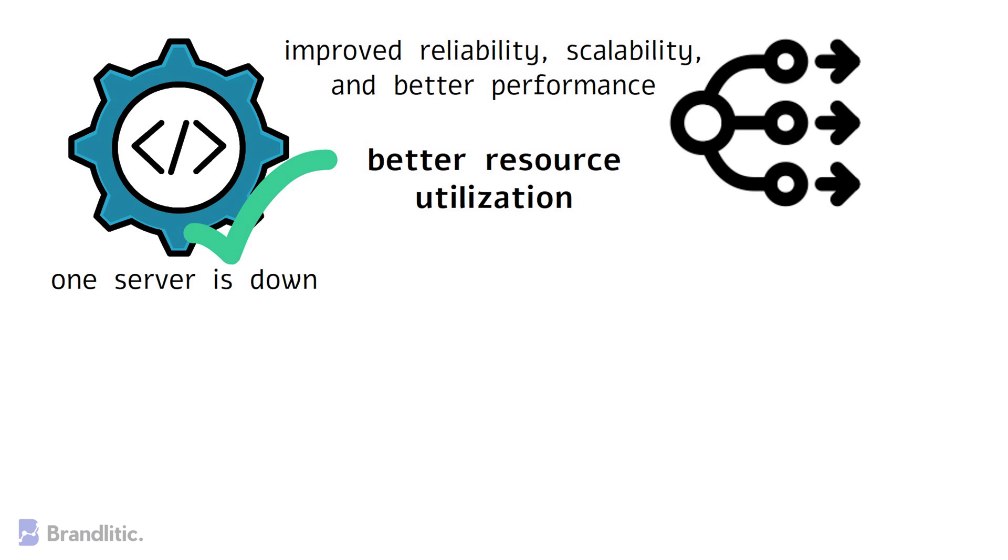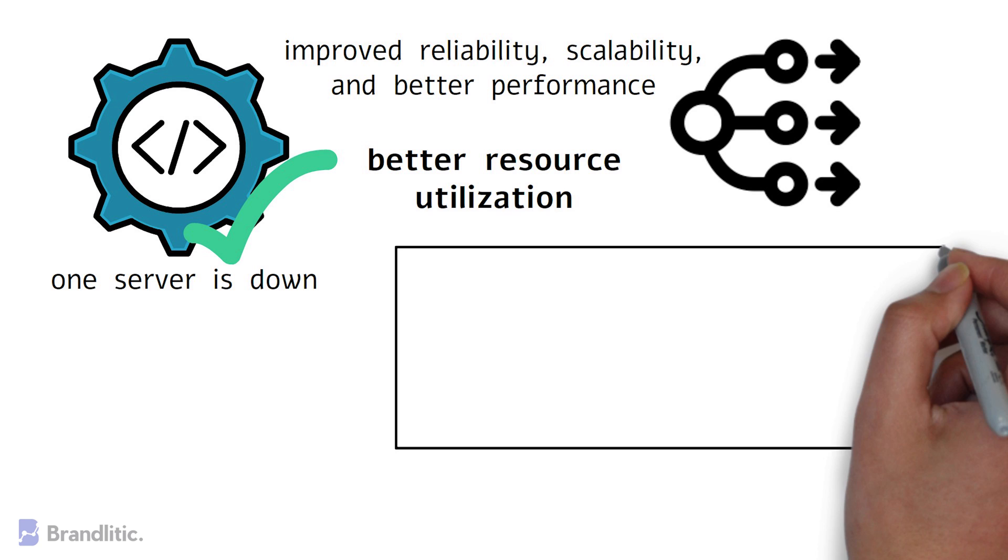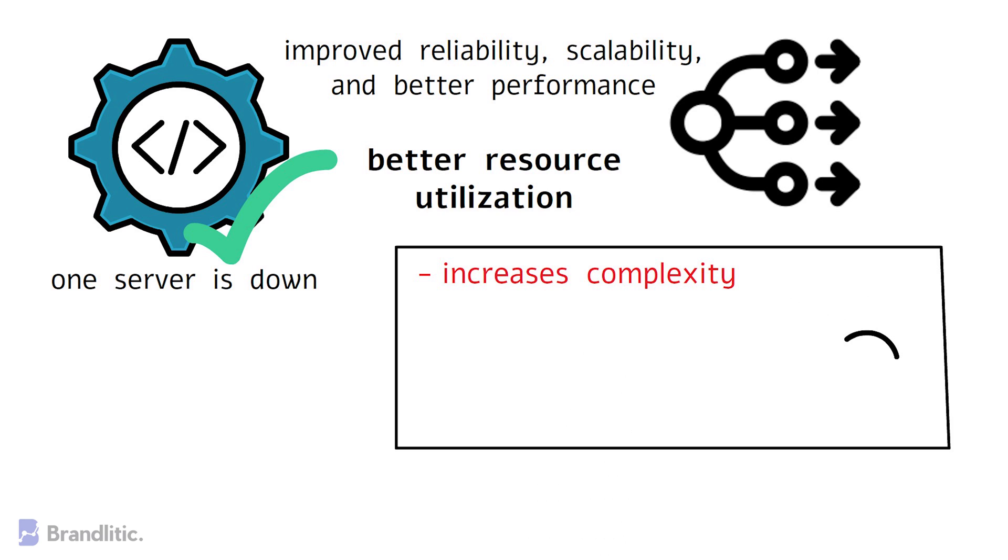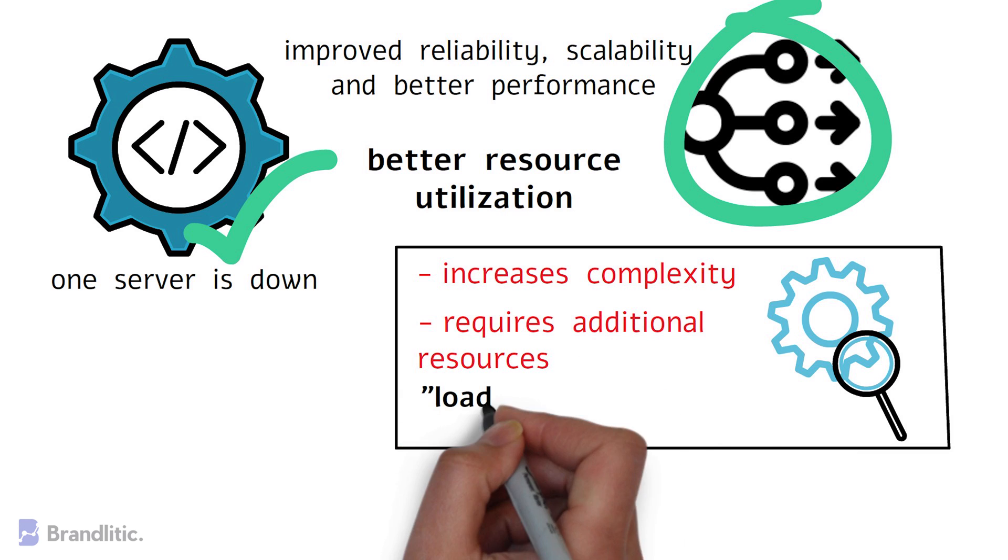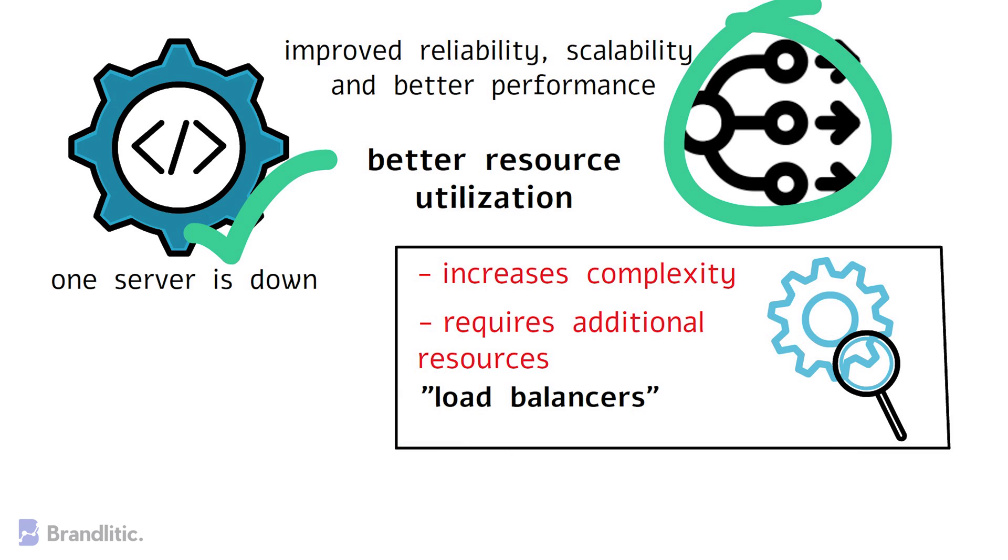However, horizontal scaling also has its drawbacks. It increases complexity, making it challenging to manage and maintain. As the number of servers in the system grows, managing them becomes more complex, and it can be challenging to ensure that all servers are running correctly. Additionally, horizontal scaling requires additional resources like load balancers to manage traffic across servers, which can add to the overall cost of the system.